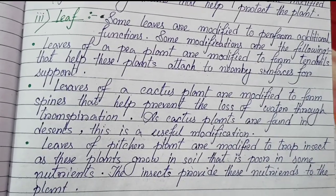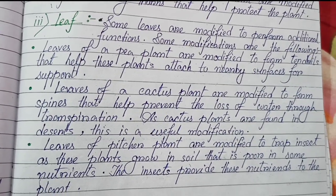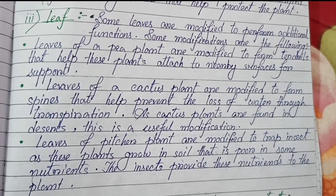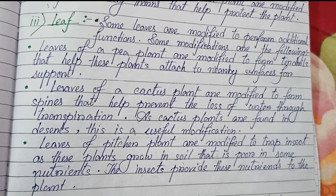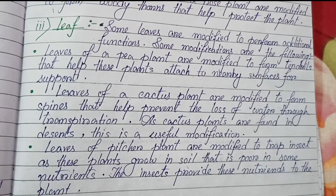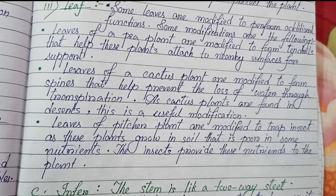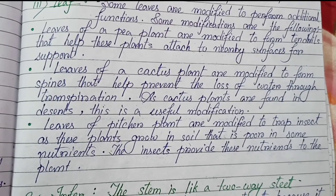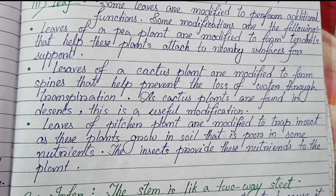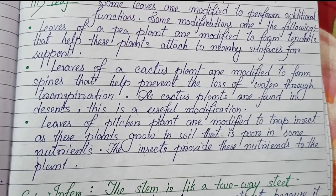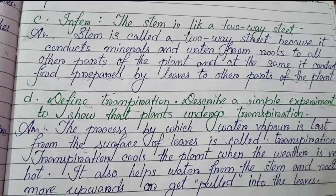Leaf modifications: (1) leaves of a pea plant are modified to form tendrils that help these plants attach to nearby surfaces for support; (2) leaves of a cactus plant are modified to form spines that help prevent the loss of water through transpiration, as cactus plants are found in desert — this is a useful modification; (3) leaves of pitcher plant are modified to trap insects, as these plants grow in soil that is poor in some nutrients, and the insects provide these nutrients to the plants.